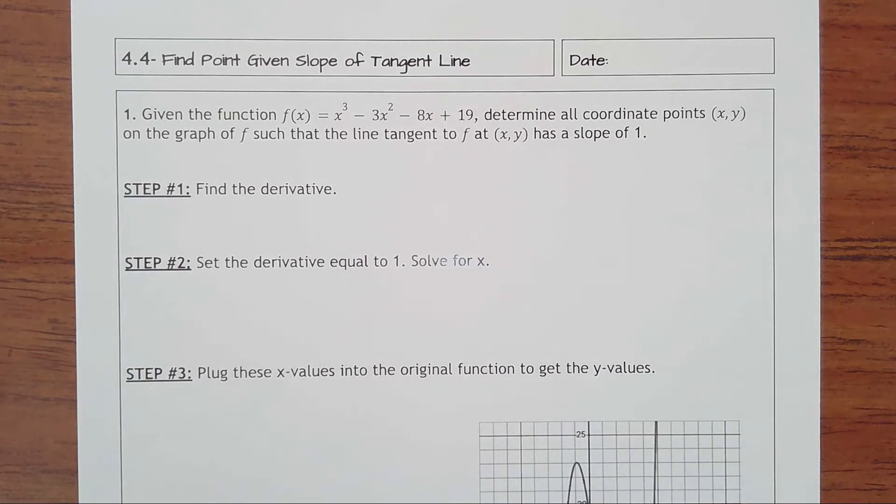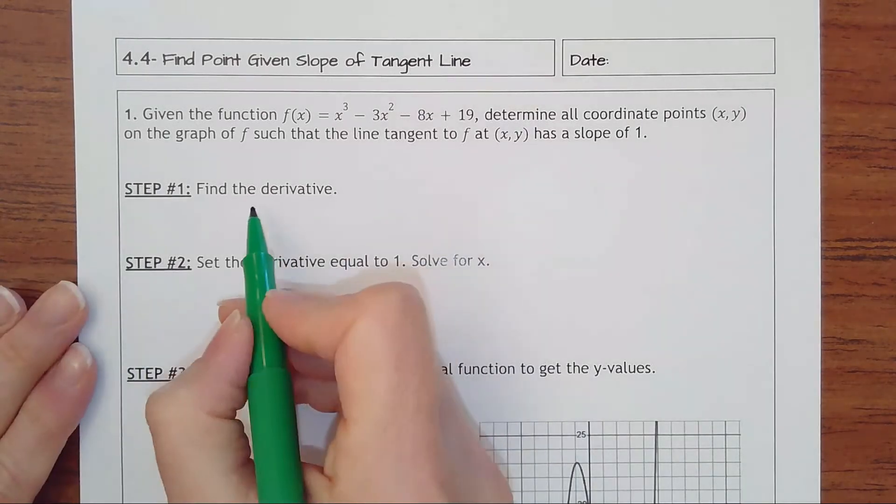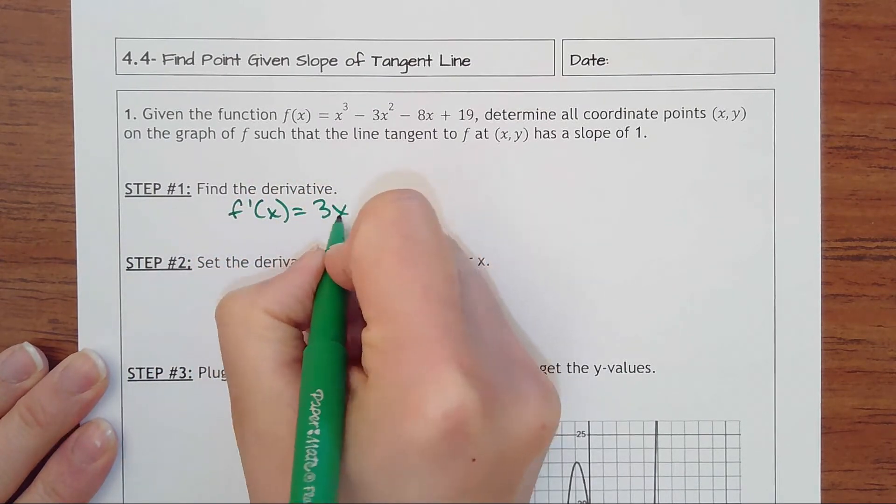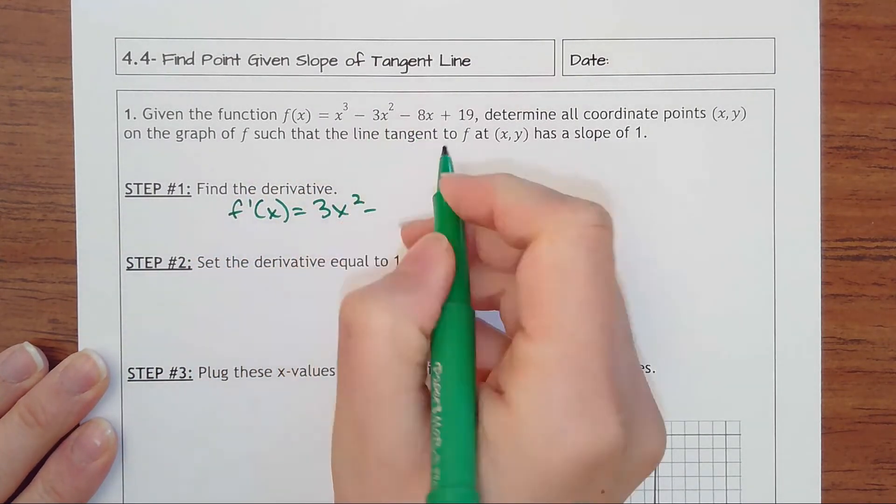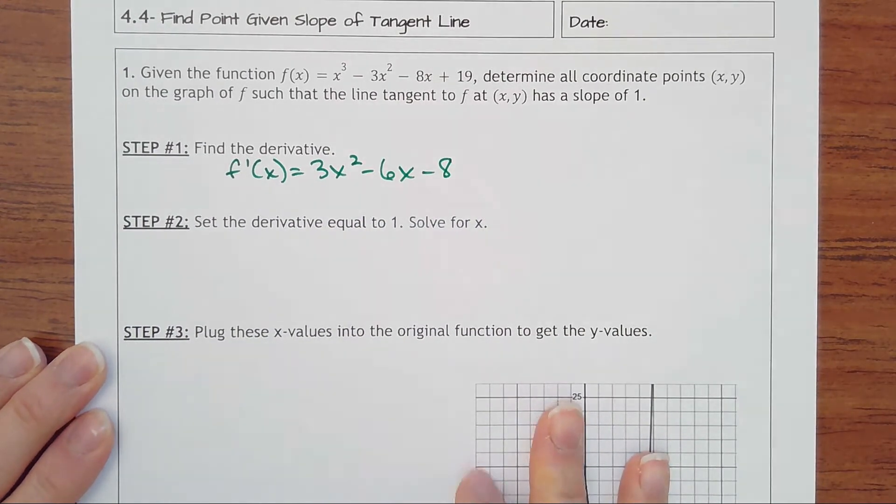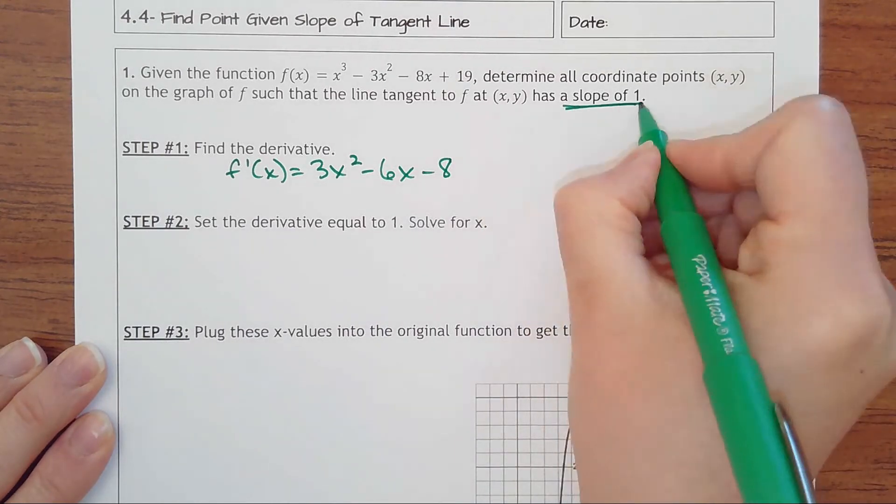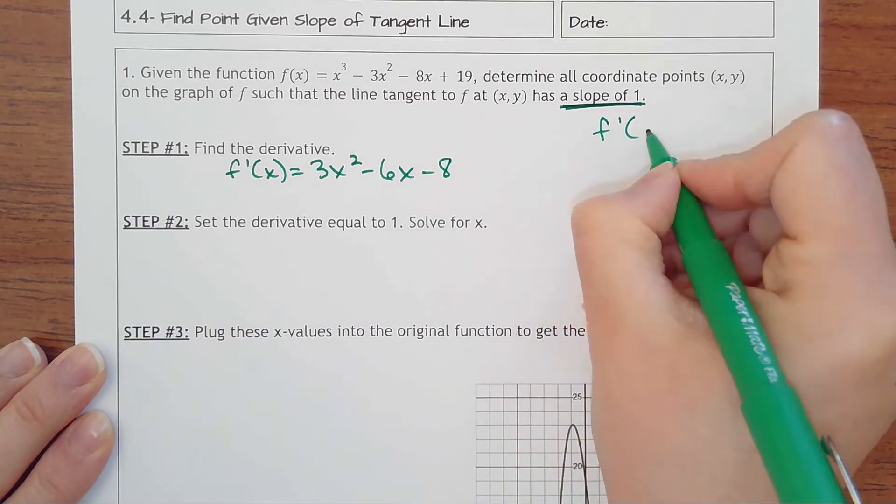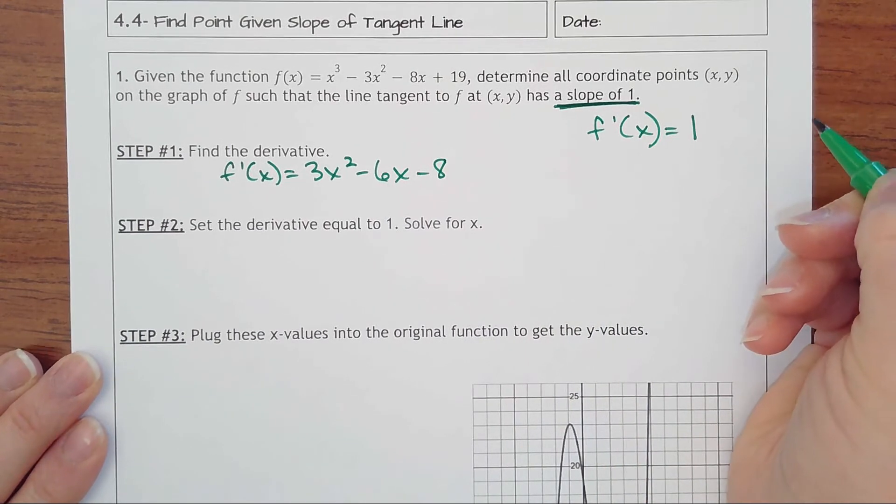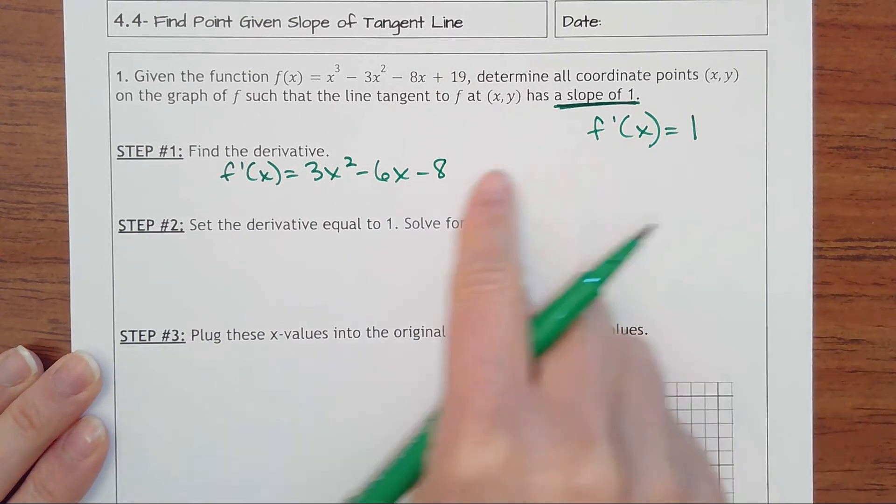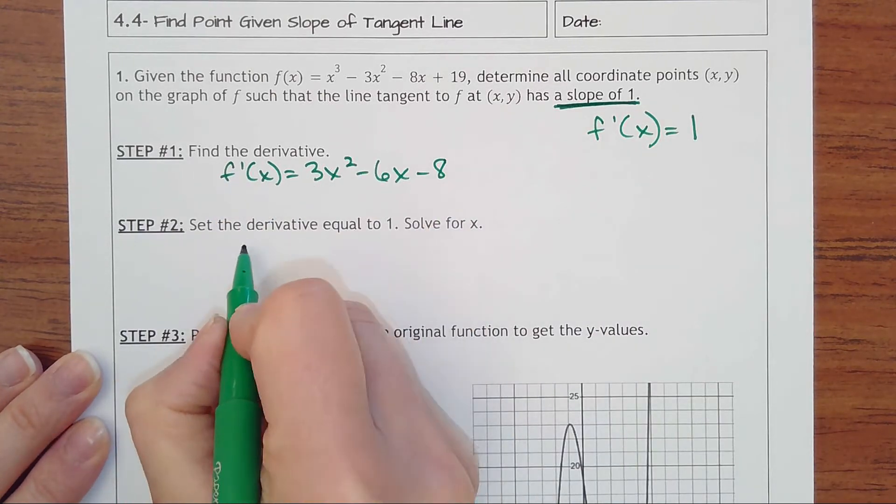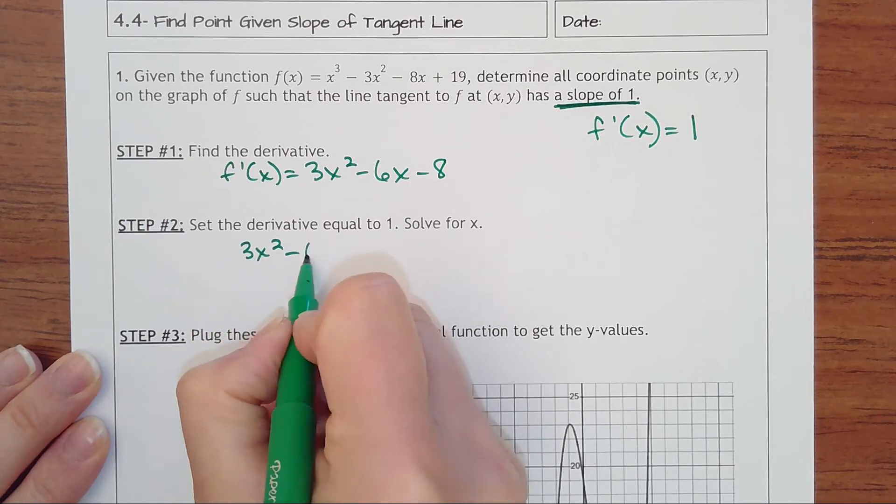Your first step is to find the derivative. f'(x) = 3x² - 6x - 8 (the 19 goes away). What we're saying is that the derivative at some x has to equal a slope of 1. So I'm going to set the derivative equal to 1: 3x² - 6x - 8 = 1.